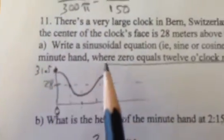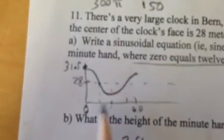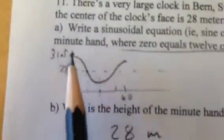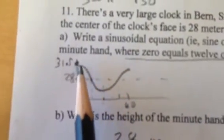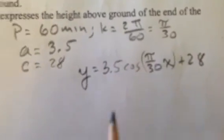Using cosine again, right? Because we're starting at the maximum. It says where 0 equals 12 o'clock noon. That means 0 on the x-axis is 12 o'clock. And so that would be at the maximum point. So that means we are using a cosine curve. So there's our function.